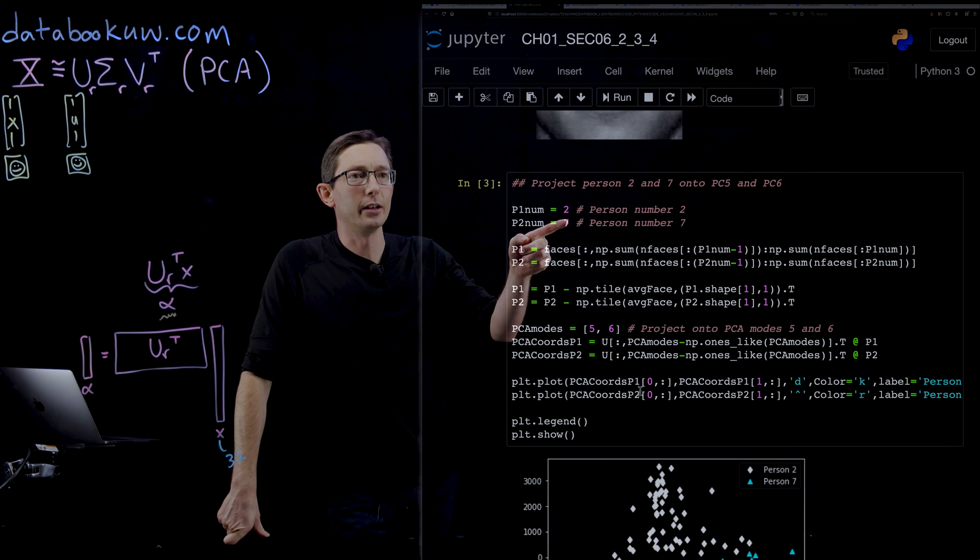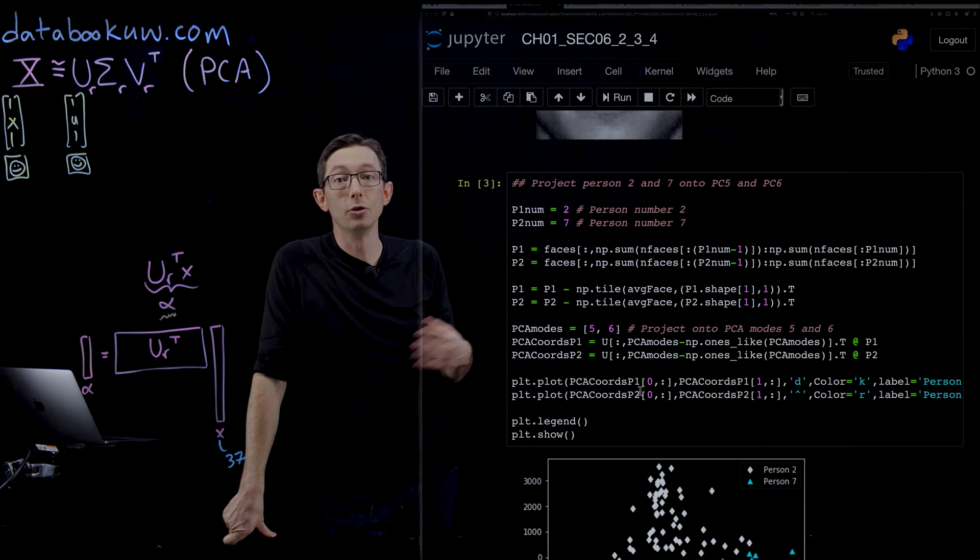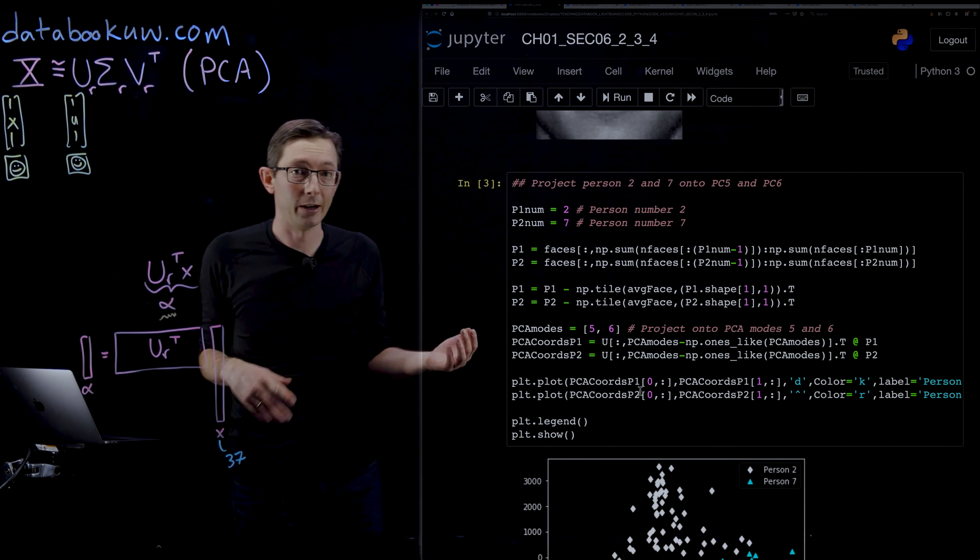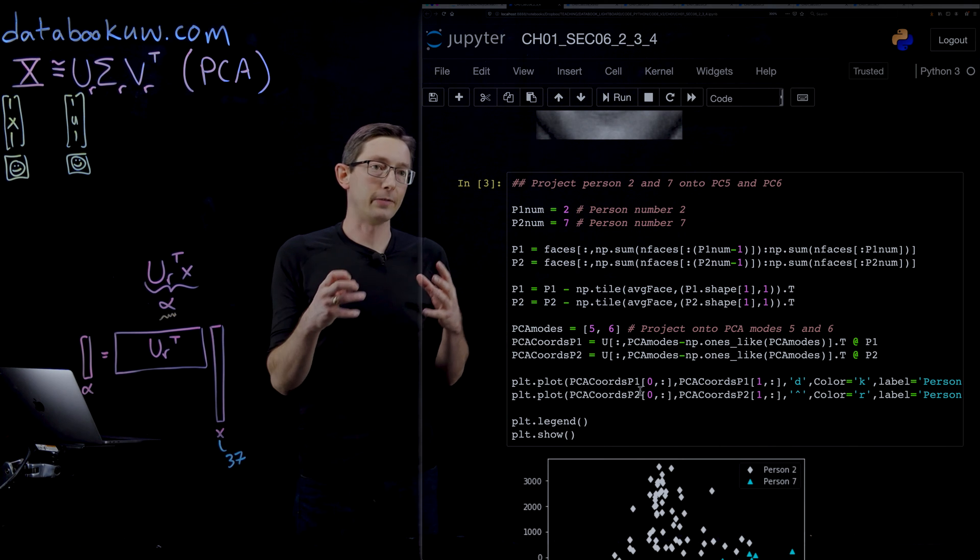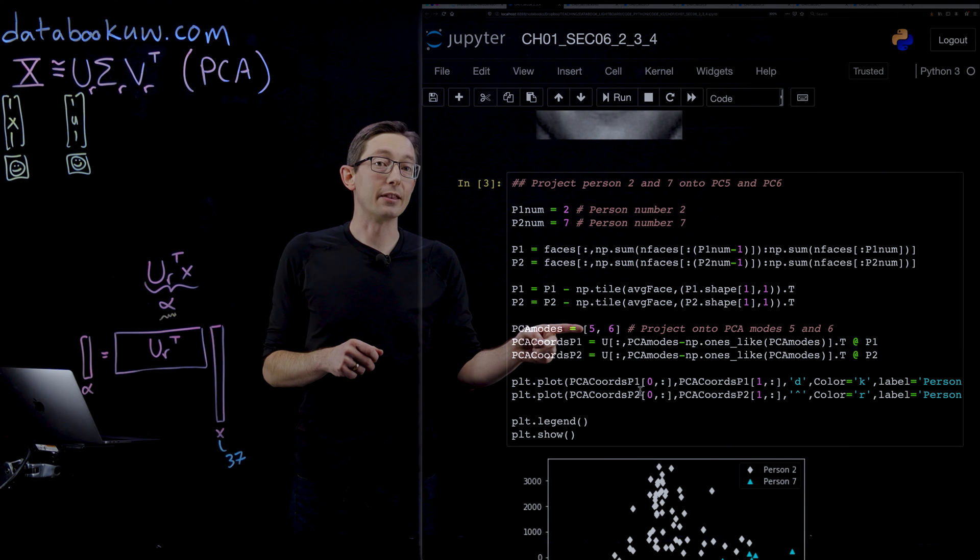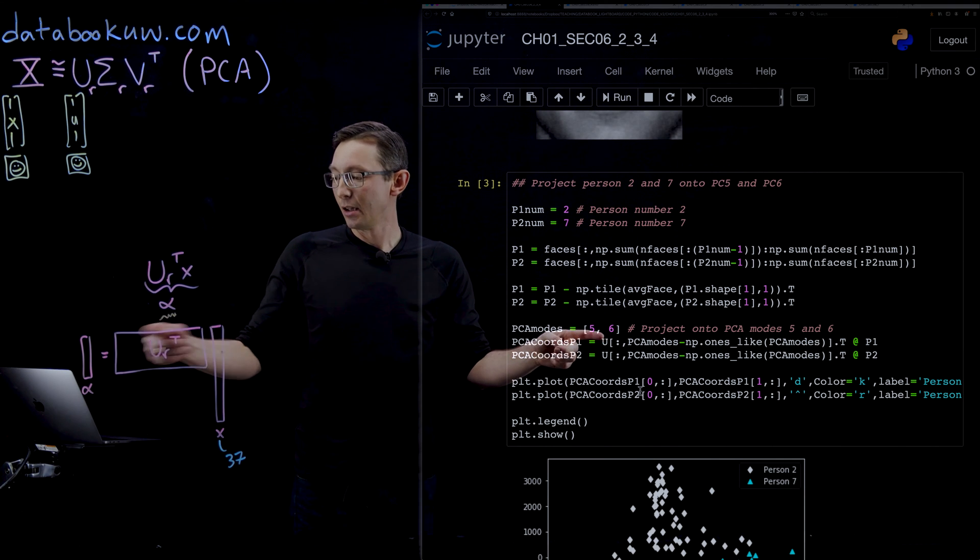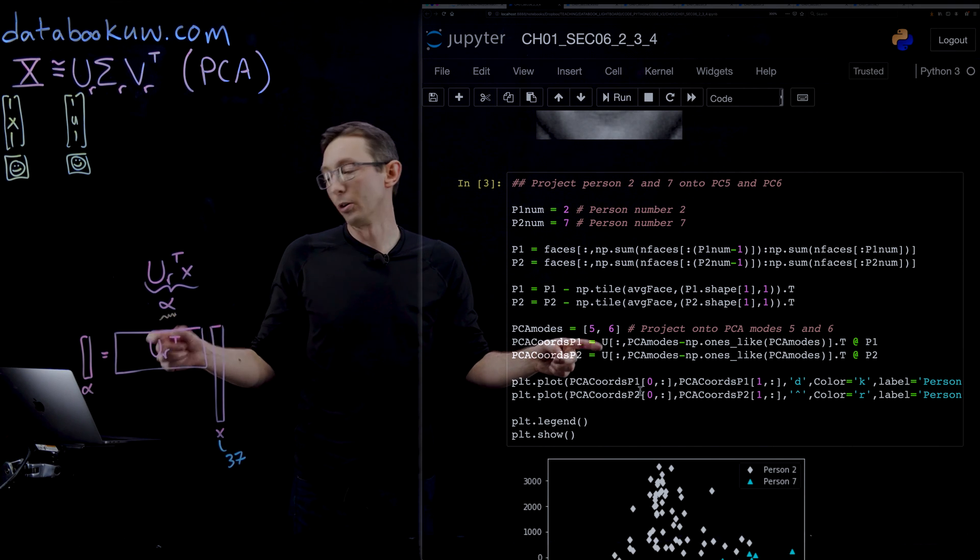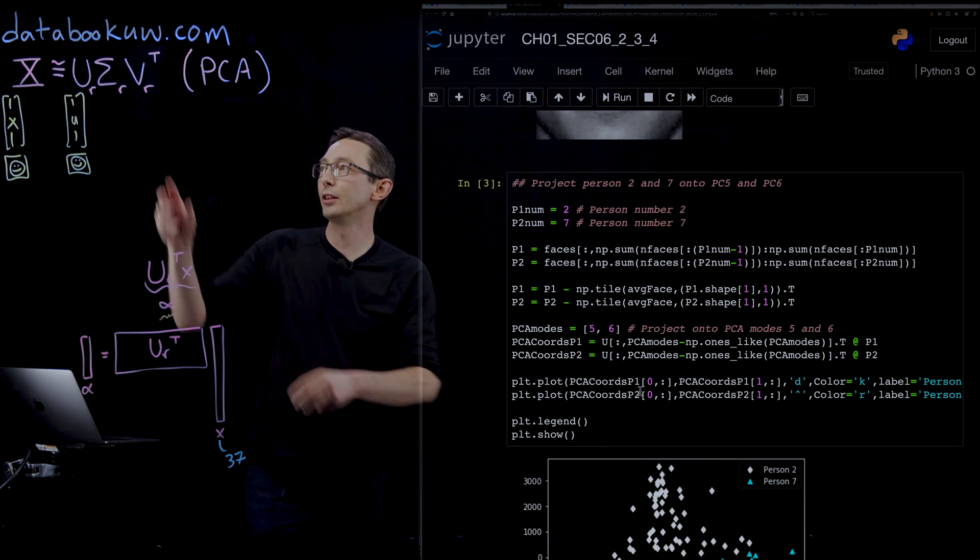Here what we're going to do is randomly pick person 2 and person 7 from my library. We're going to pull only their faces and project them into the fifth and sixth principal component or column of U.